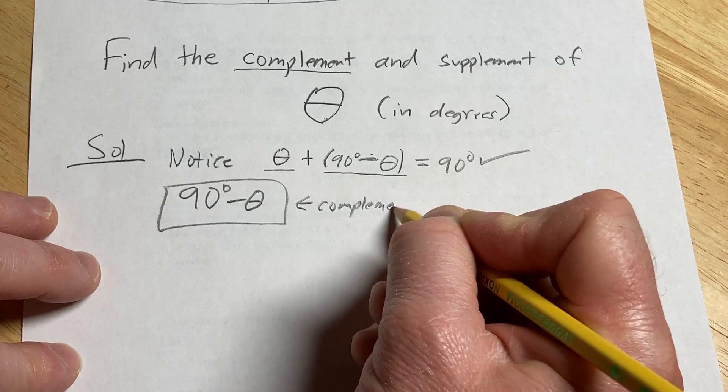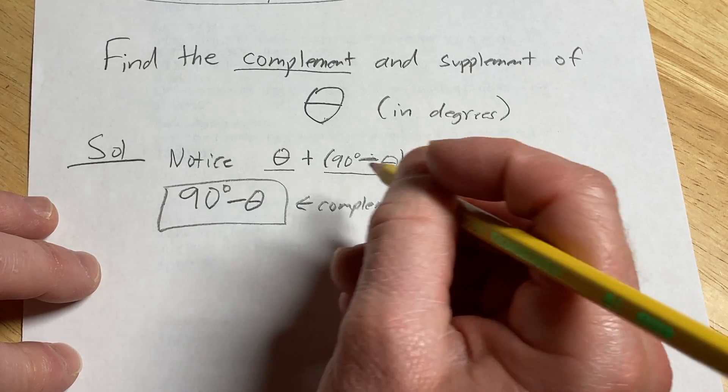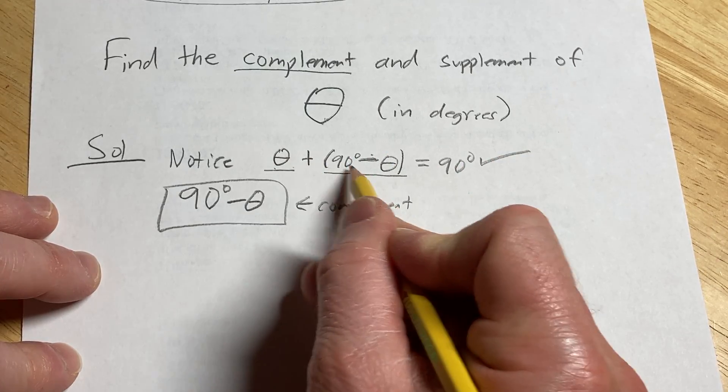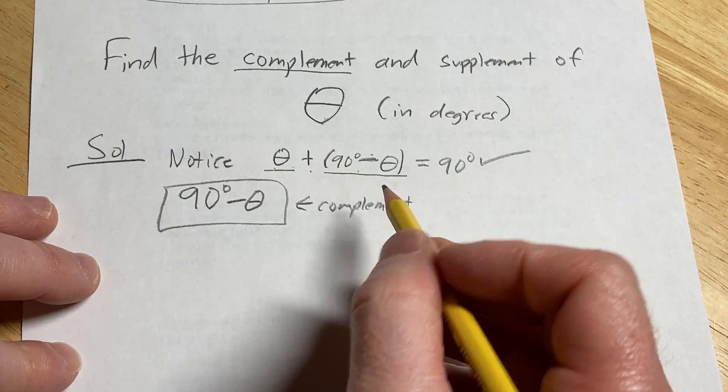Because a complement of an angle is an angle that you add to it that gives you 90 degrees. These angles are said to be complementary.